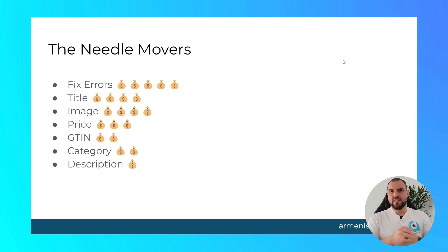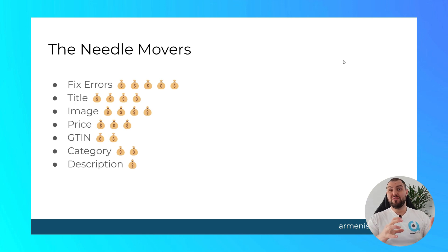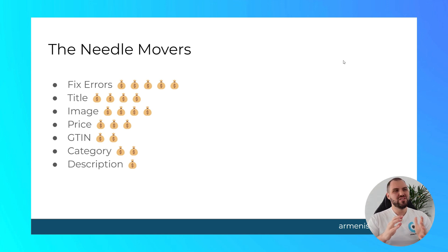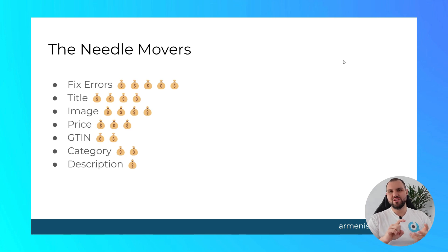Lastly, the description is also important, but a lot less so. It is important in telling Google what the product is, but it's not so much important for conversion. I don't think people look at it that much. The title, price, and image are far more important.